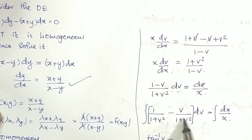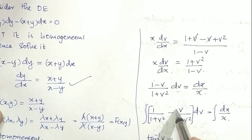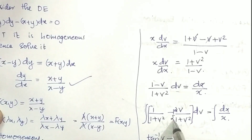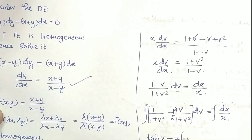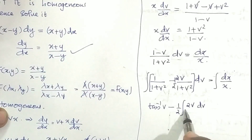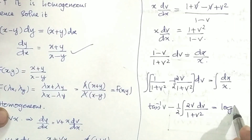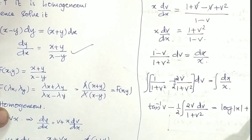Integrating 1/(1 + v²) gives tan inverse v. For the second term, v/(1 + v²): the derivative of (1 + v²) is 2v, so we write (1/2) integral of 2v dv/(1 + v²), giving (1/2) log|1 + v²|. The right side integrates to log|x| + log c.